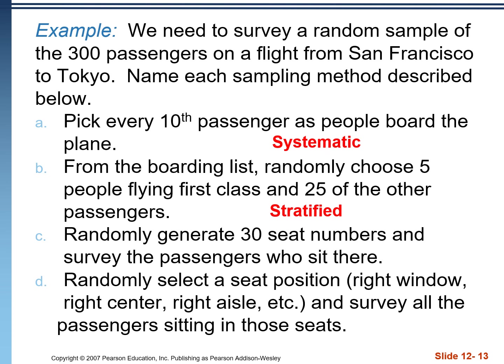Part C: randomly generate 30 seat numbers and survey the passengers who sit there. This is a simple random sample — you could get any 30 passengers: maybe all first class, maybe all not first class, maybe all in the very back. Part D: randomly select a seat position — right window, right center, right aisle, etc. — and survey all passengers sitting in those seats. Since each seat column runs down the whole length of the plane and includes first class and coach passengers, and we're performing a census on everyone in that group, this is a cluster sample.